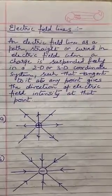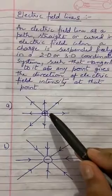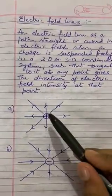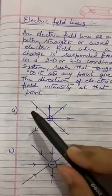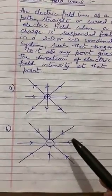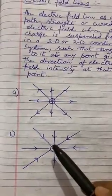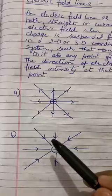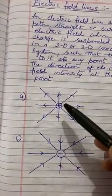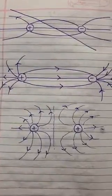If we take an isolated positive charge, we can see that the electric field lines are radially outward, which is shown by the arrowheads pointing outward. Whereas if we take an isolated negative charge, the electric field lines are radially inward, which is just opposite to that of the positive charge.